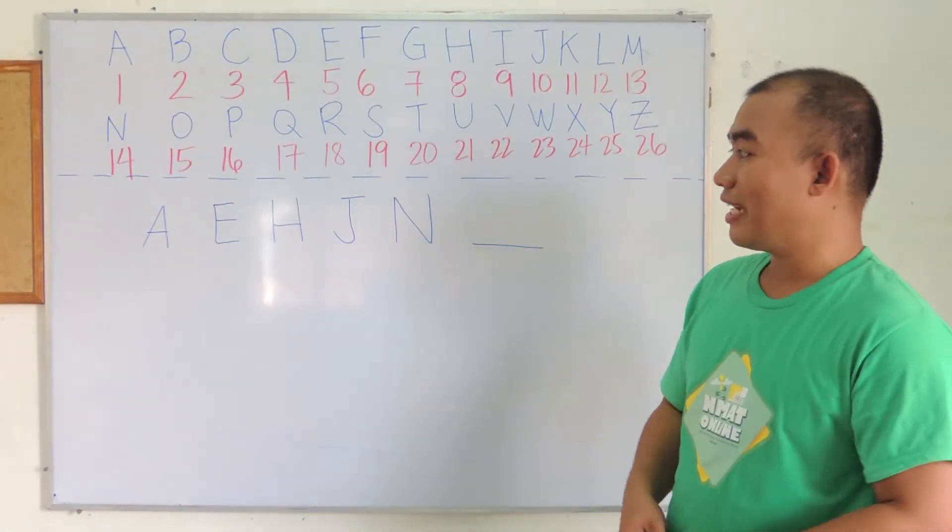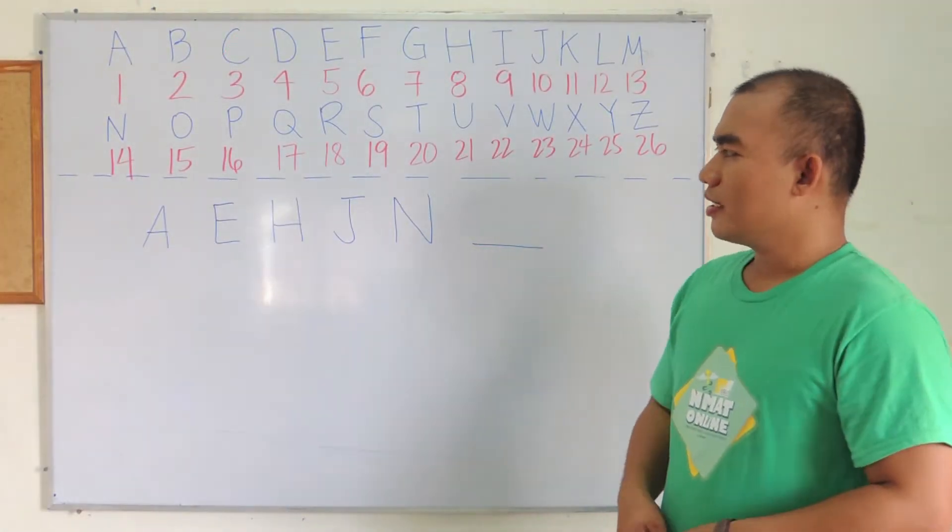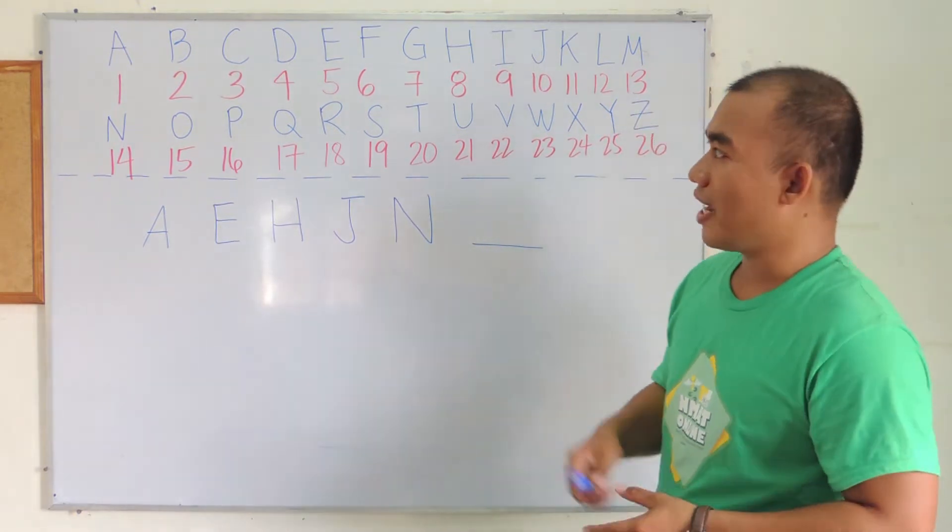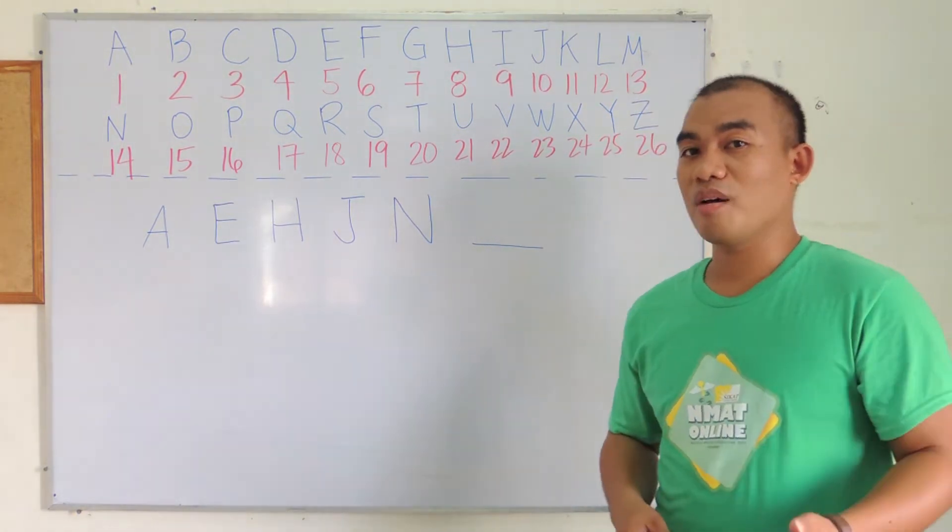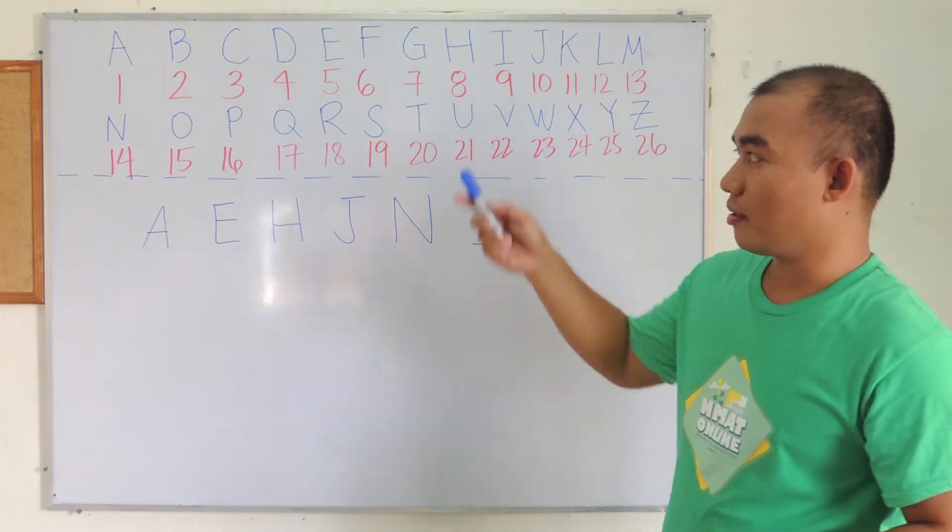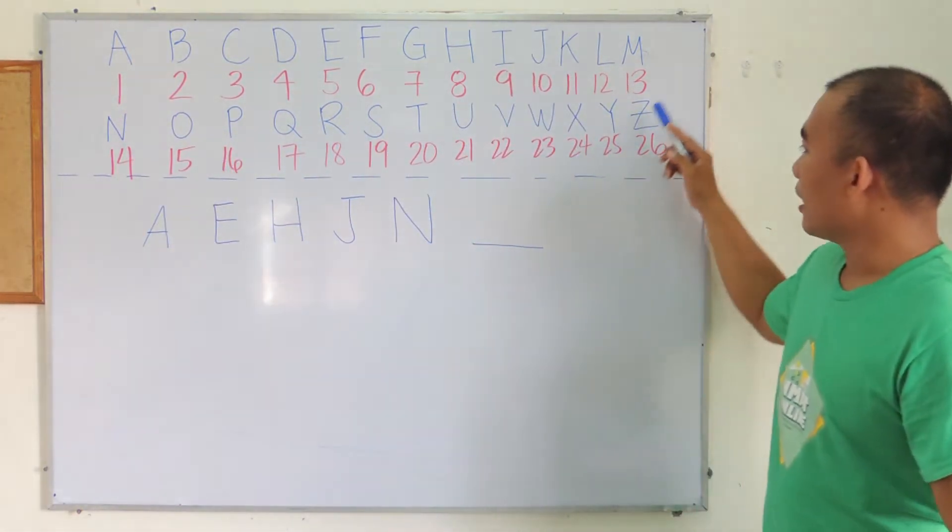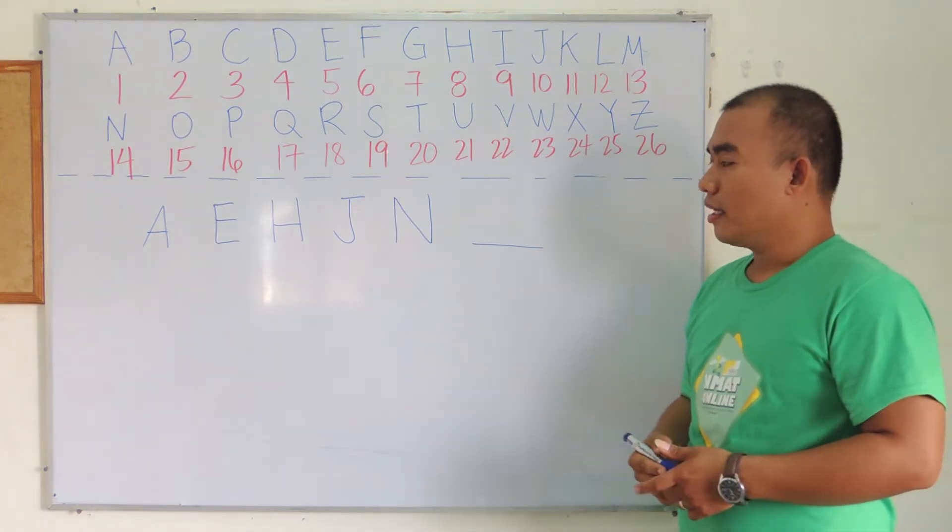We have an example of a letter series. The strategy for letter series is to write the letters from A to Z with any corresponding number from 1 to 26, where A will be 1, B will be 2, up to Z, 26.